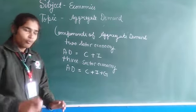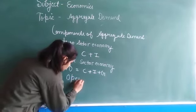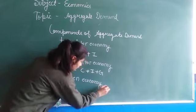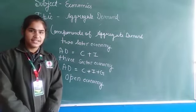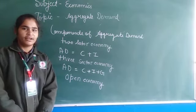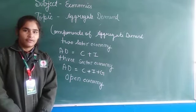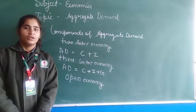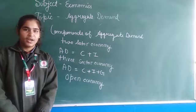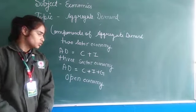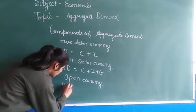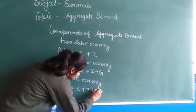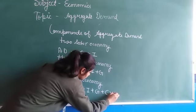And now, fourth thing is the open economy. Friends, as it is called an open economy, here we will take conjunction of the whole world with the rest of the world also, which are taken as the difference between exports and imports made in the economy, which is known as net exports. So here, aggregate demand is equal to C plus I plus G plus X minus M.